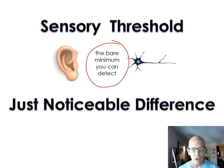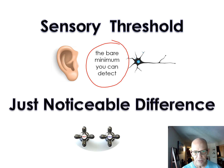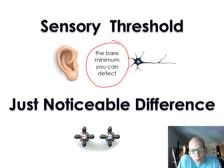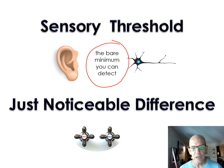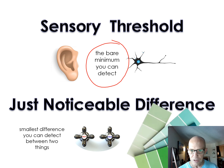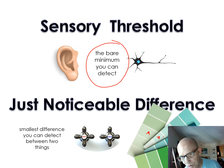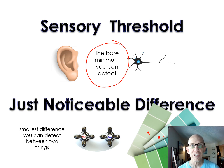Just noticeable difference is about detecting the difference between two things. In the shower, what's the minimum amount you have to adjust the hot water to notice a difference? What is the bare minimum you can detect between two stimuli? For me, being artsy, the smallest differences I notice are in colors — like this color has more blue versus yellow in it — because I mix paints all the time and have to know the difference between colors when I paint.